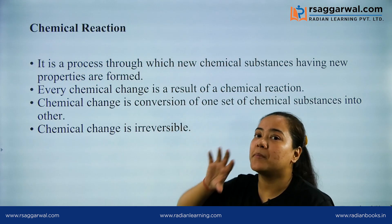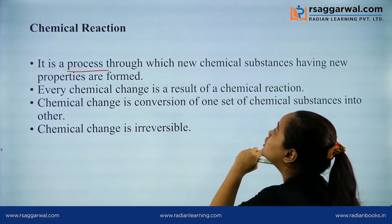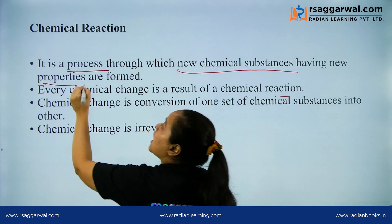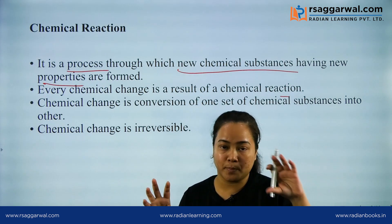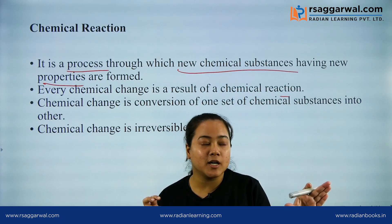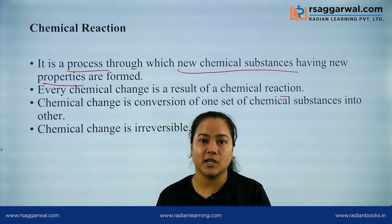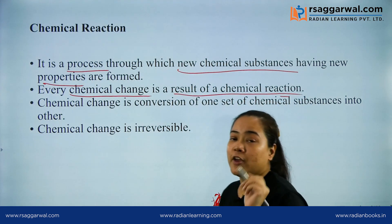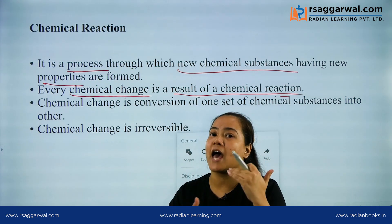So now let's see what is a chemical reaction. A chemical reaction is a process through which new chemical compounds — new chemical substances having new properties — are formed. In the example of milk and curd, the properties of milk are completely different from the properties of curd. So a new chemical compound is being formed from the previous one and both of them have completely different chemical properties. Every chemical change is a result of a chemical reaction — whenever a chemical reaction is taking place, it means some kind of chemical change has been taking place.